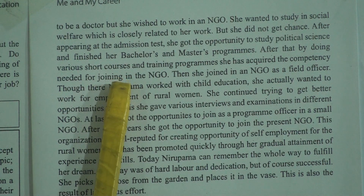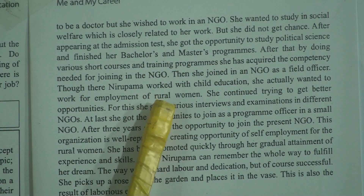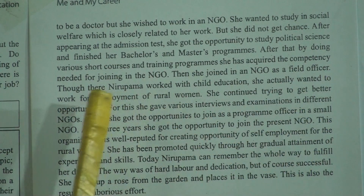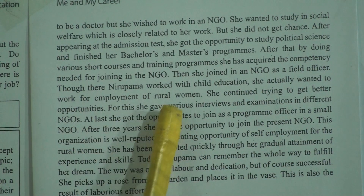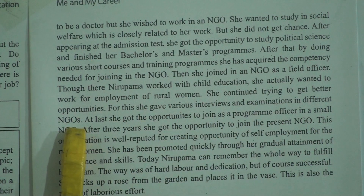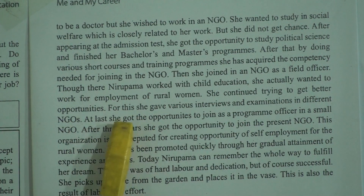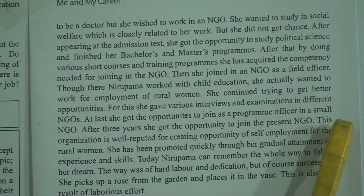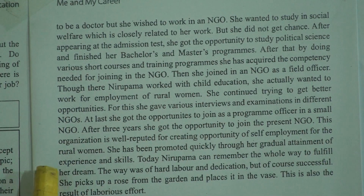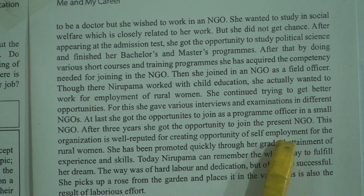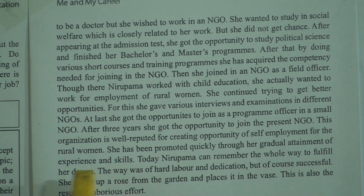But she didn't get the chance. After appearing in the admission test, she got the opportunity to study political science and finished her bachelor's and master's programs. After that, by doing various short courses and training programs, she acquired the competency needed for joining an NGO. Then she joined an NGO as a field officer. Though she worked with child education, she actually wanted to work for employment of rural women. She continued trying to get better opportunities, giving various interviews and examinations in different NGOs. At last, she got the opportunity to join as a program officer in a small NGO. After three years, she got the opportunity to join the present NGO, which is well reputed for creating opportunity of self-employment for the rural women. She has been promoted quickly through her gradual attainment of experience and skills.